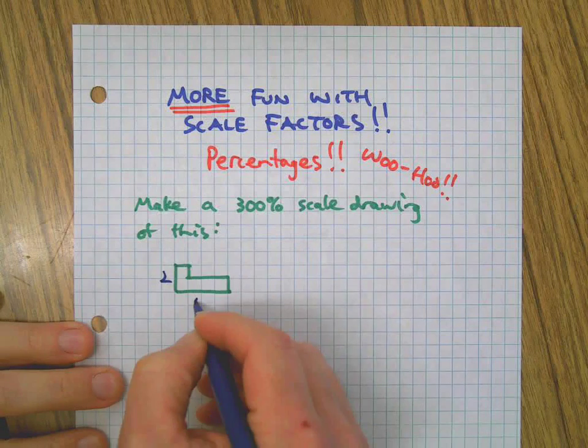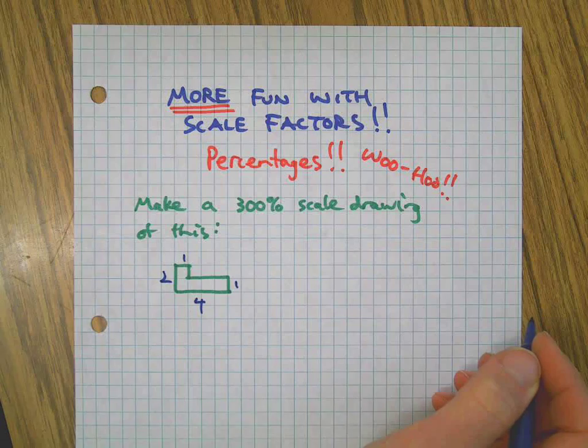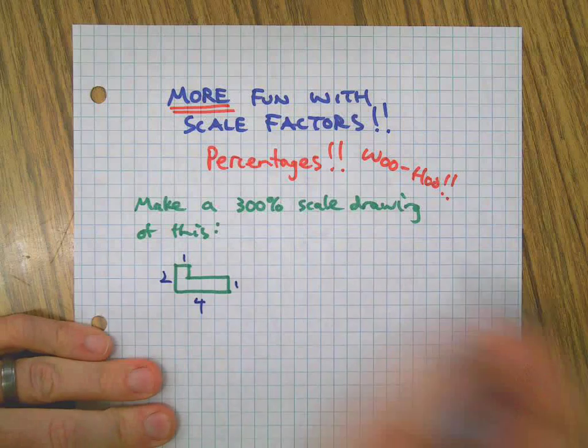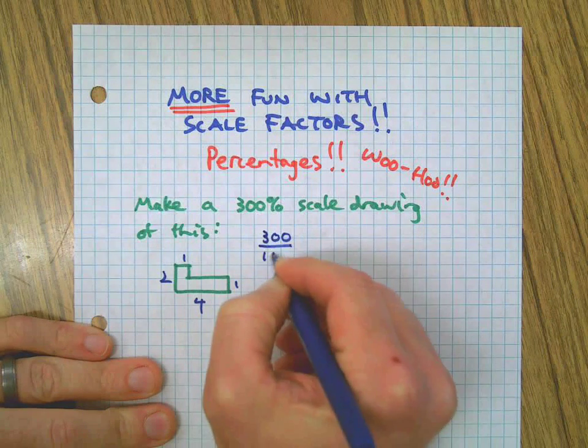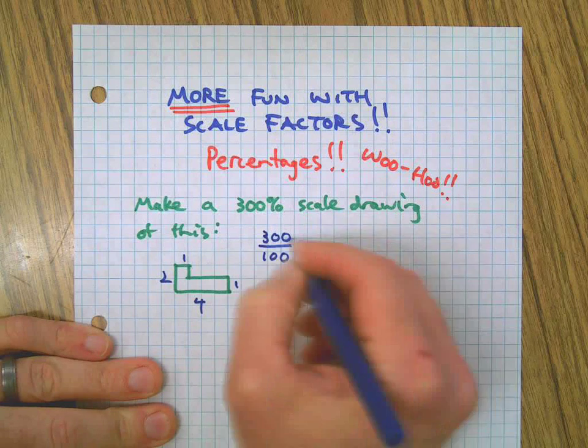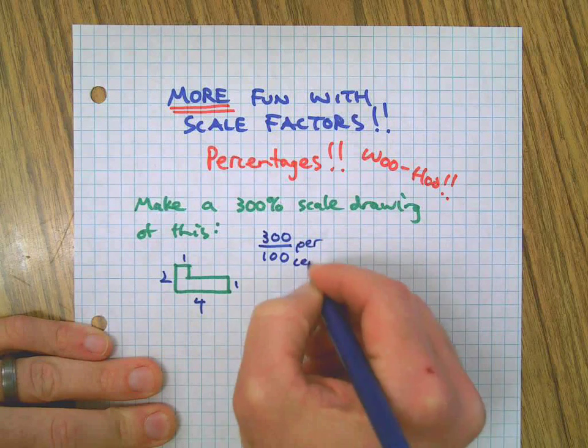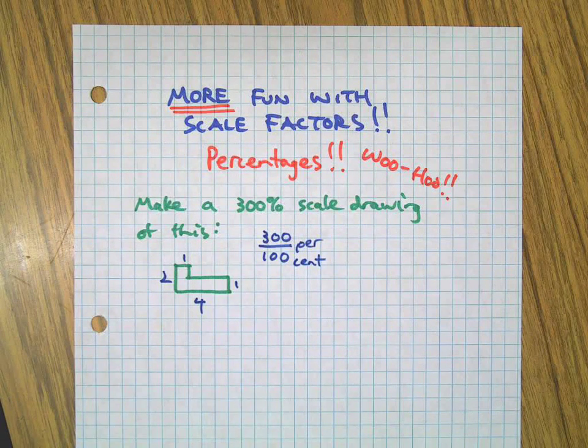We'll just label the sides here: twos, fours, and ones. Okay, let's say you're supposed to make a 300% scale drawing of this. What's that mean? Well, first of all, you need to remember that 300% means that it's actually a fraction, right?